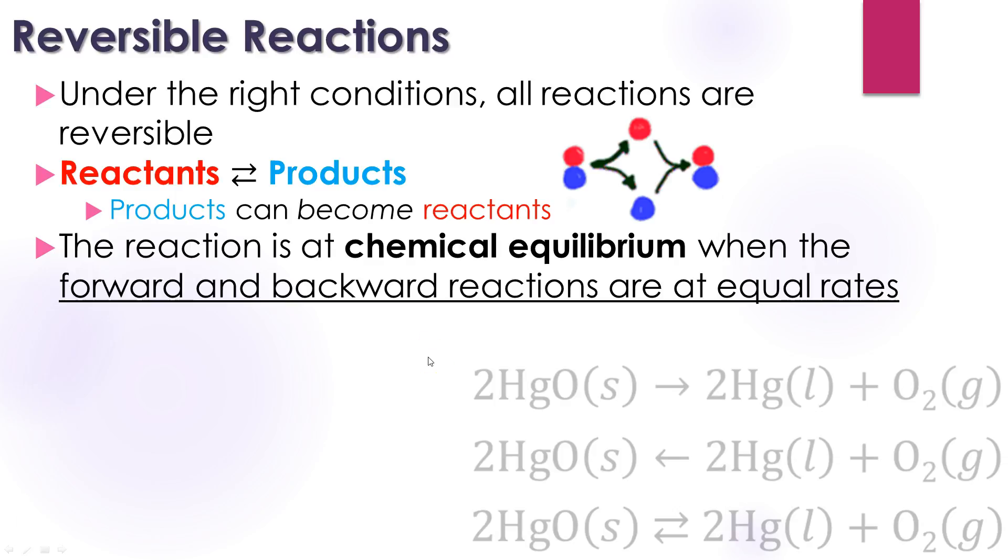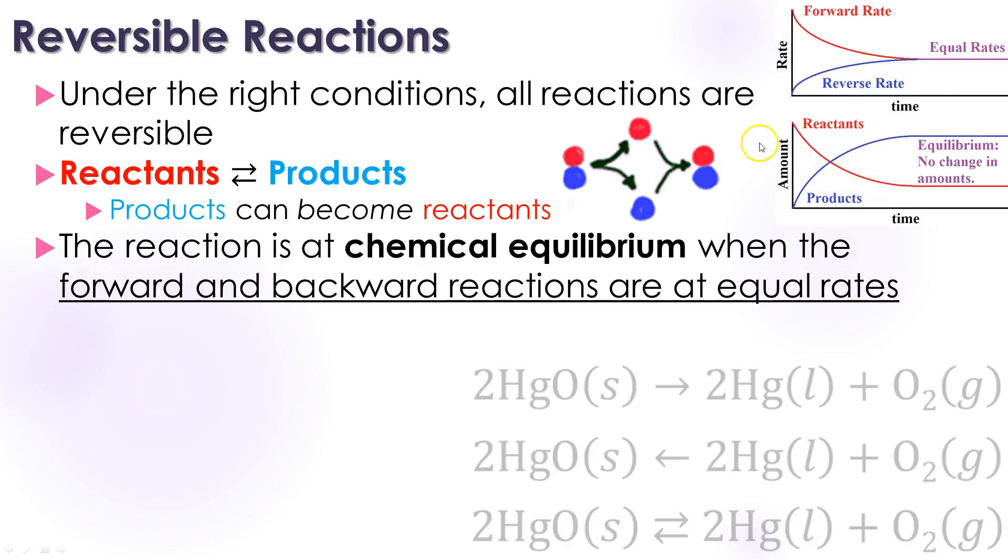We would say the reaction is at chemical equilibrium when the forward and backward reactions are at equal rates. So what's happening is both of these are happening. We would say it's chemical equilibrium when those are both happening at the same speed. Here's the forward rate. You can see very quickly that's going to start to slow down. The reverse rate is very quickly going to start to speed up. We would say that it's at equilibrium when those are happening at the same rate. It's not that chemistry is not happening. It's just that you can't tell anymore because whatever forward reaction you have is balanced out by a reverse reaction.